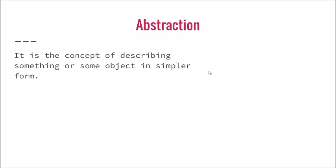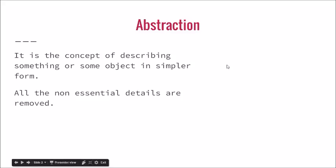So abstraction is a concept of describing something or some object in a much simpler form. That means you will try to remove all the non-essential details which are not required to describe the object. In OOP, abstraction is achieved through inheritance.